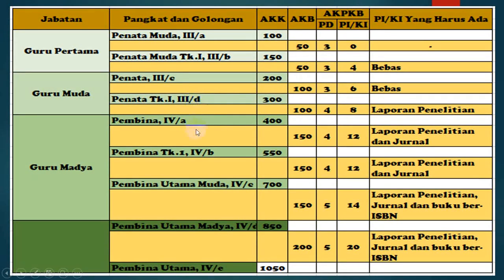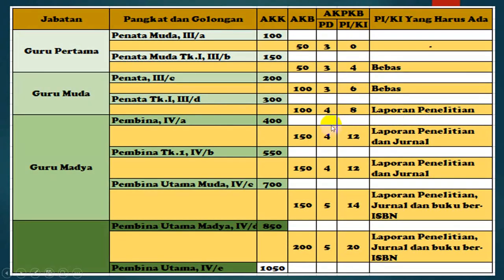Ketika mau masuk ke 4A, dari 3D ke 4A dibutuhkan 100 AK, PD-nya 4 dan PIKI-nya 8. Tetapi dari 8 PIKI ini harus dipenuhi 1 laporan penelitian, misalkan PTK, eksperimen, atau penelitian pengembangan. Jadi harus ada 1 laporan penelitian yang diseminarkan di sekolah. Mulai masuk ke 4A, guru harus sudah bisa membuat penelitian.